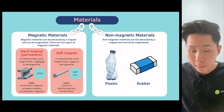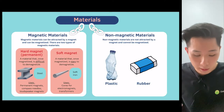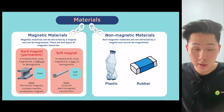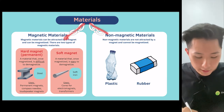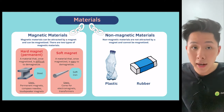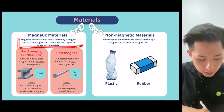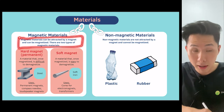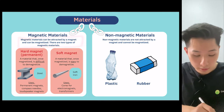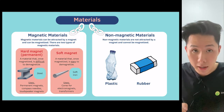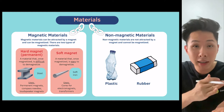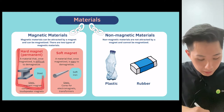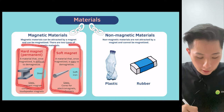When it comes to magnetism, you need to understand the following: all materials on Earth can be categorized into magnetic and non-magnetic materials. Magnetic materials can be attracted by a magnet and can be magnetized. There are two types of magnetic materials — meaning if something is a magnetic material, it could still either be a hard magnet or a soft magnet.